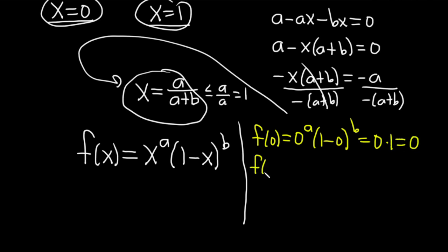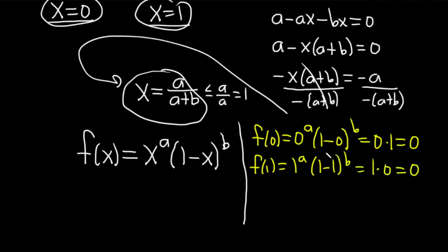Plugging in 1: f(1) = 1^a times (1 minus 1)^b = 1 times 0 = 0. And last, the most interesting answer — f of a over (a plus b) — is likely to give us the maximum.